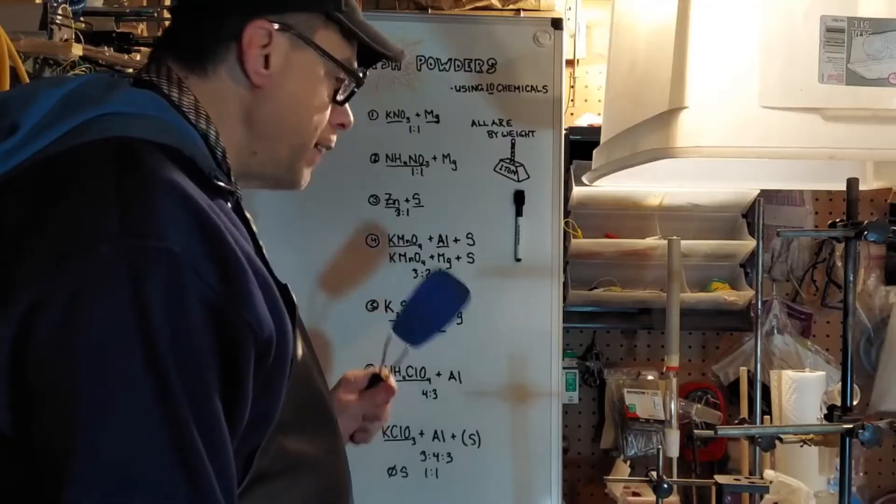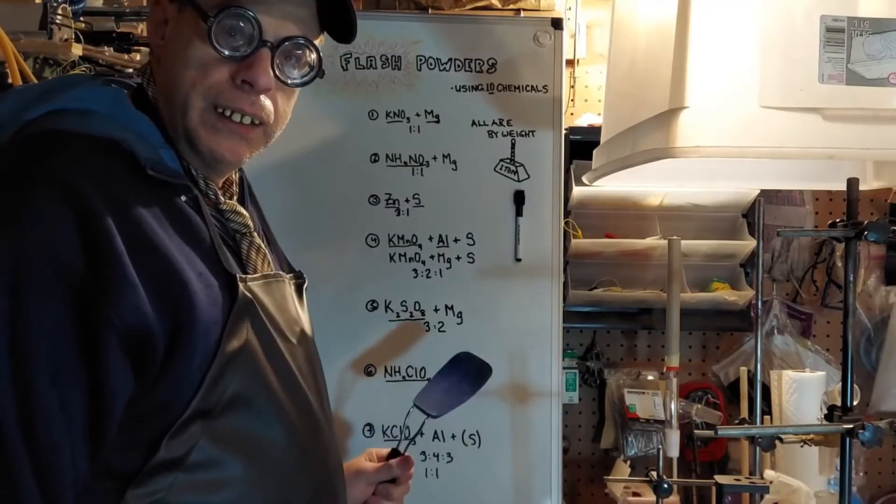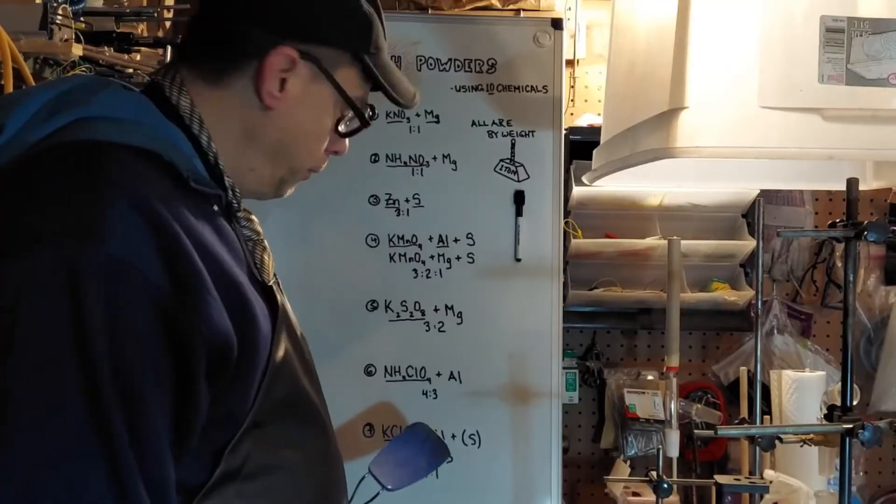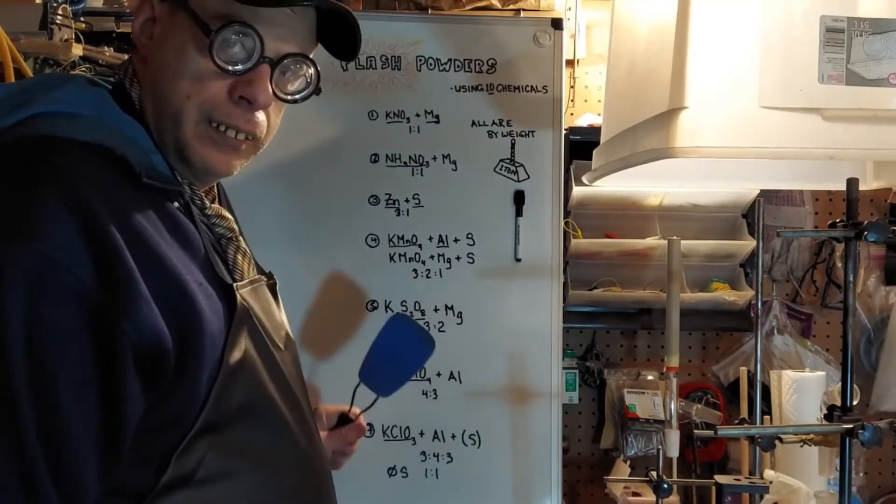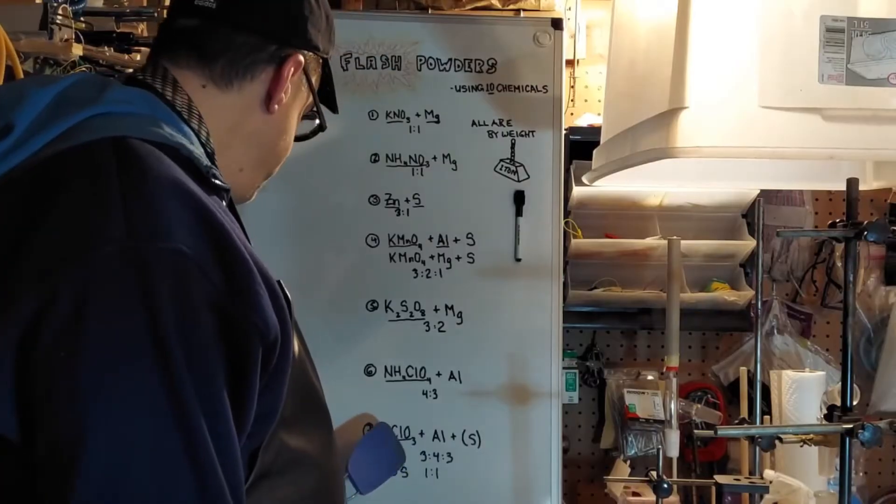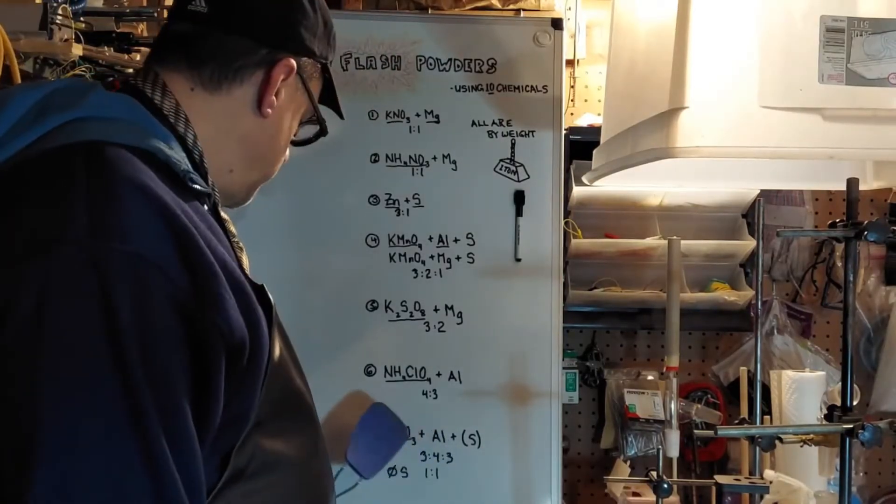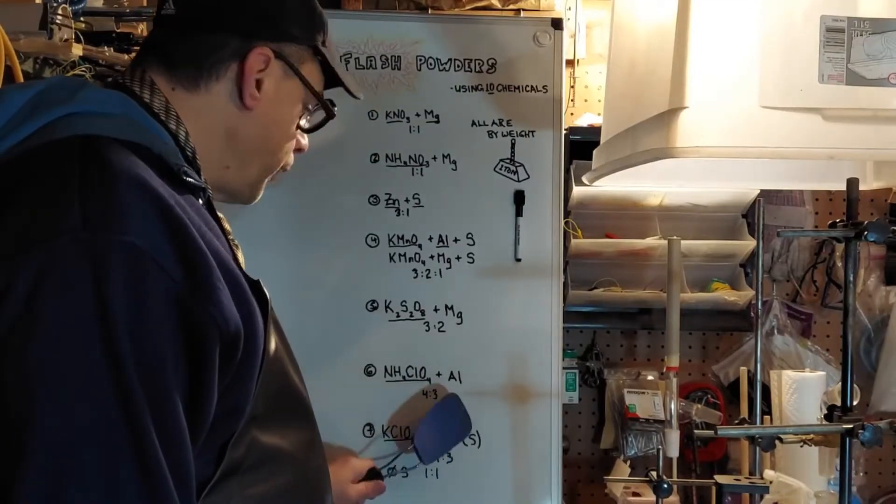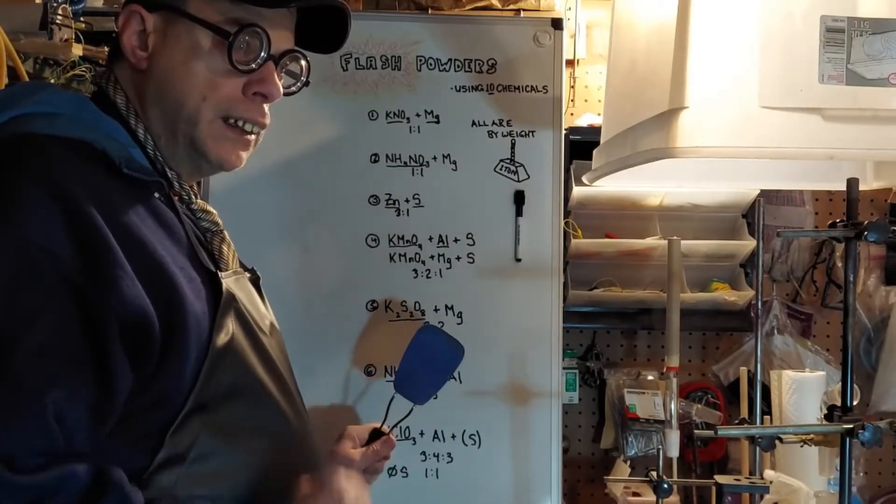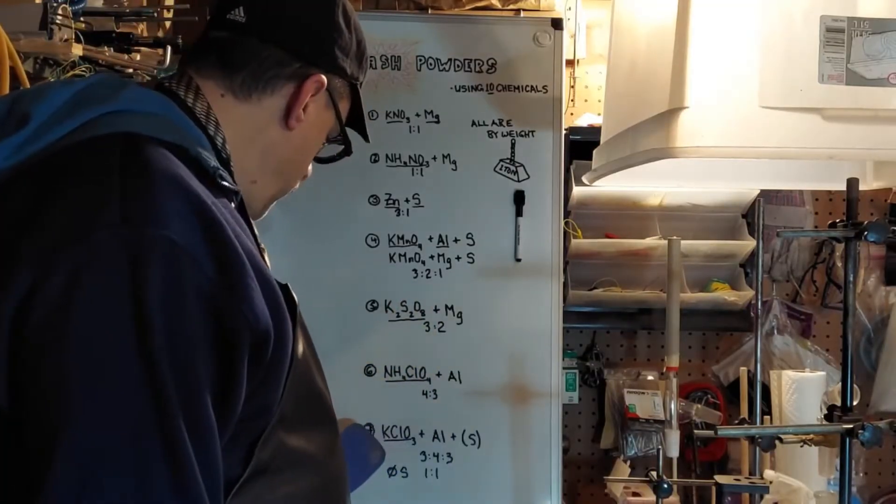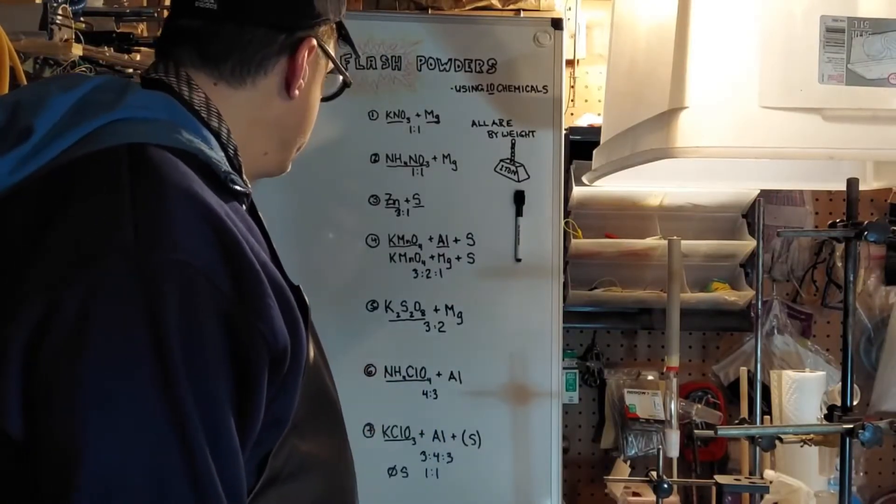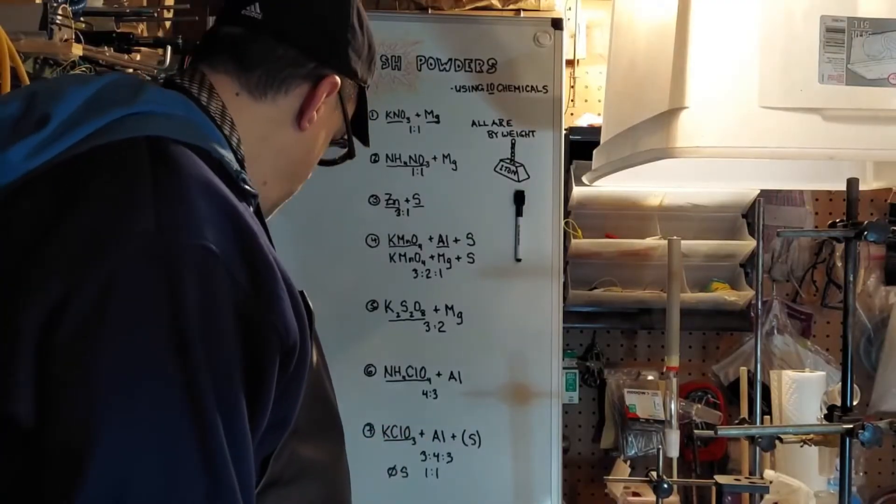And number seven, this last one you got to be a little tricky with. Some people say this might be a little bit on the dangerous side, but I've done it and it seems okay. That potassium chlorate is missing one oxygen compared to the other potassium per chlorate, and aluminum and sulfur. And you want that in a three to four to three ratio. Yeah, I should have done that different, but three to four to three. And the sulfur got them a little parentheses there because you don't necessarily need that. That makes it burn more fast and bright. So if you don't use that sulfur at all, you just want potassium chlorate and aluminum in a one to one ratio. One to one ratio.